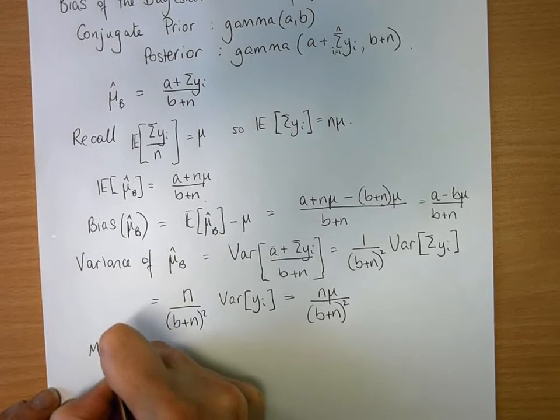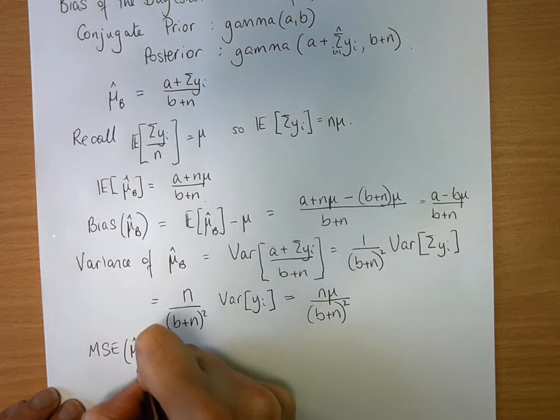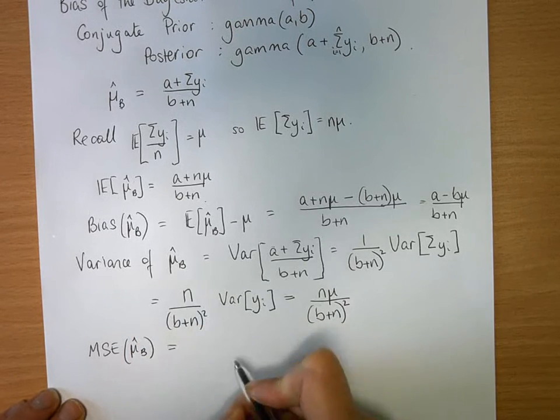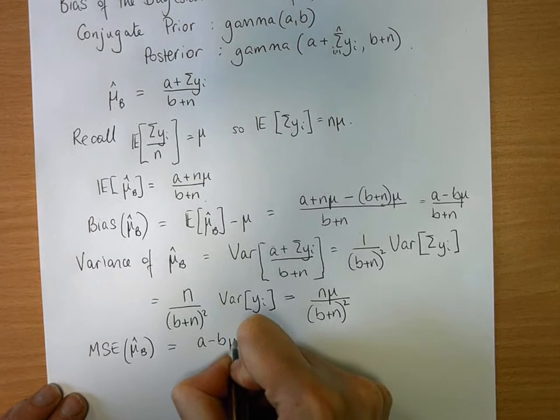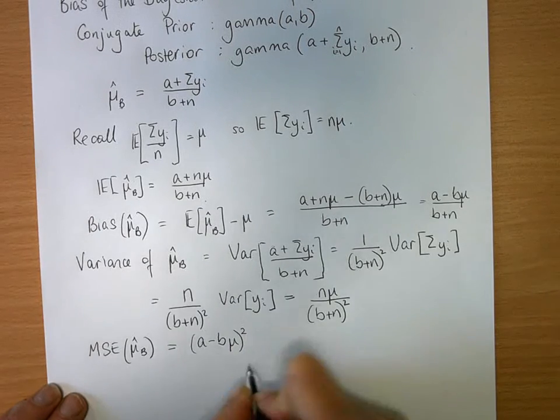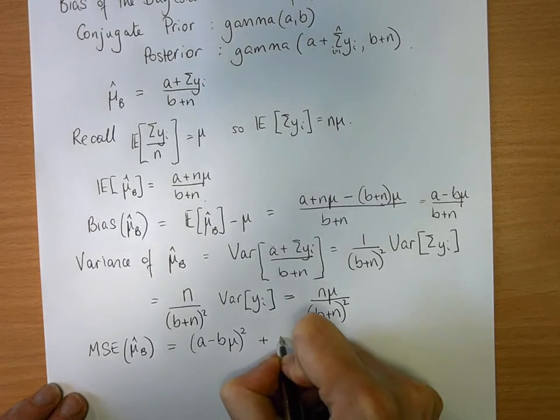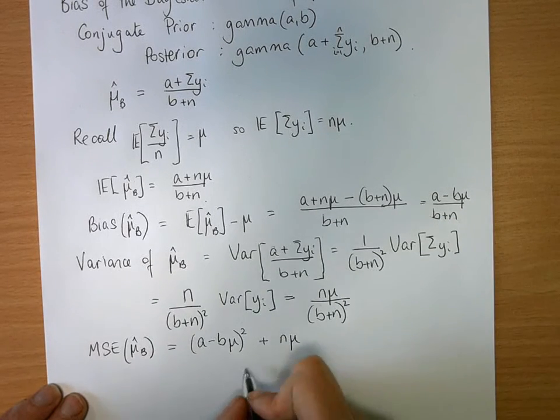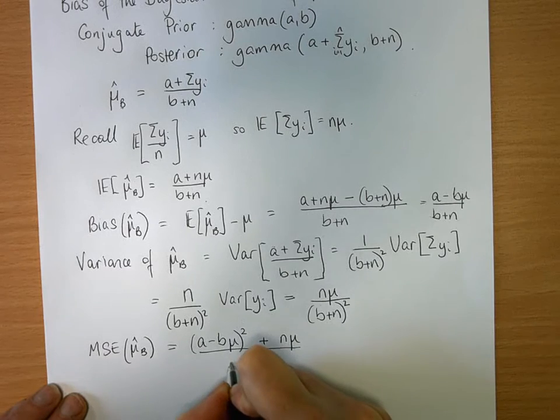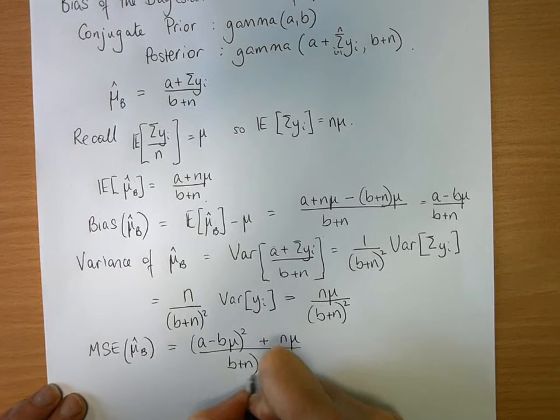And therefore, the mean square error of my estimator is the bias squared, so a minus b mu squared, plus my variance, n mu, and they have the same denominator because we'd have to square this b plus n for the bias, b plus n squared.